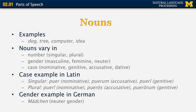In Latin, the same word 'puer,' meaning 'boy,' can be spelled in many different ways. In the singular, 'puer' is the nominative or subject case, 'puerum' is the accusative or object case, and 'pueri' is the genitive meaning 'of the boy.' In the plural, 'pueri' is the nominative, 'pueros' is the accusative, and 'puerorum' is the genitive meaning 'of the boys.'